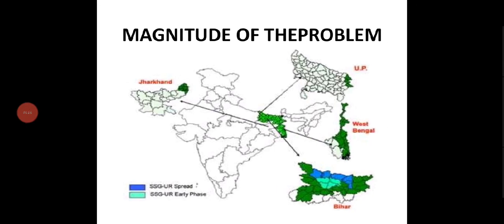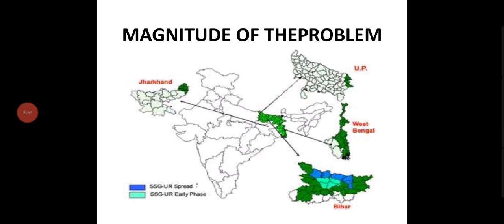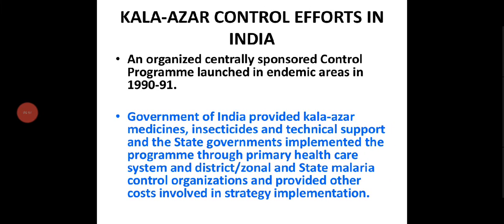Kalazar is mainly seen in Jharkhand, Bihar, UP, and West Bengal. A centrally sponsored control program was launched in endemic areas in 1990–91. The Government of India provided Kalazar medicines, insecticides, and technical support, while state governments implemented the program through the primary health care system, district, zonal, and state malaria control organizations.